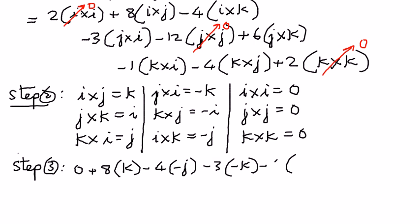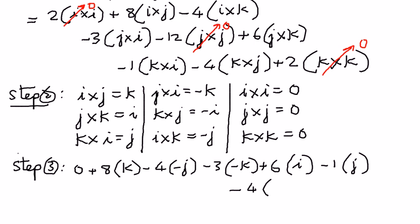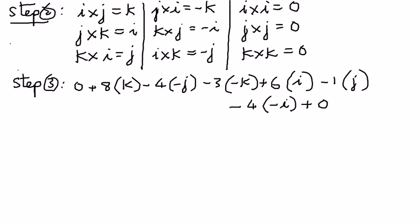Let's review this — after negative 3 times j cross i is negative k, then we have plus 6 times j cross k is i, then minus 1 times k cross i equals j, and then minus 4 times k cross j is negative i, and then plus 2 times k cross k is 0. So we've used the properties and simplified as much as possible.